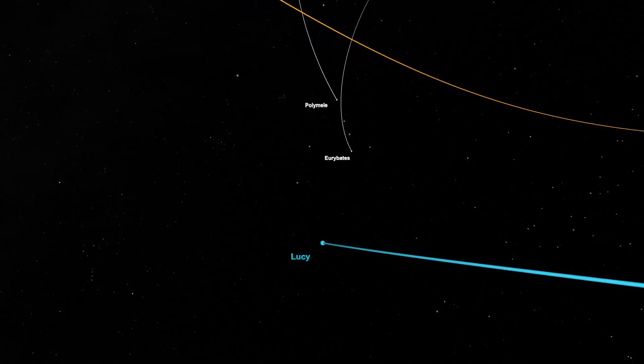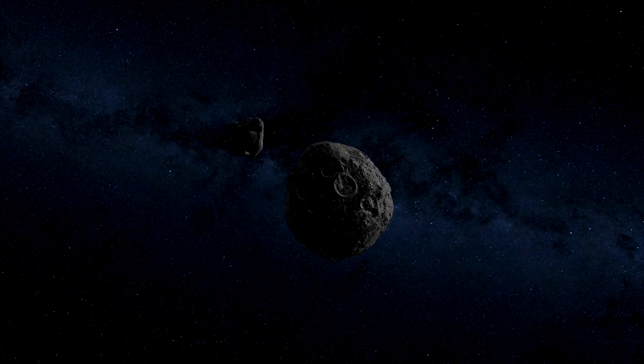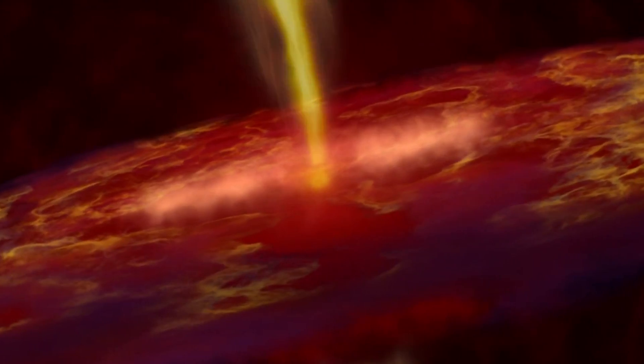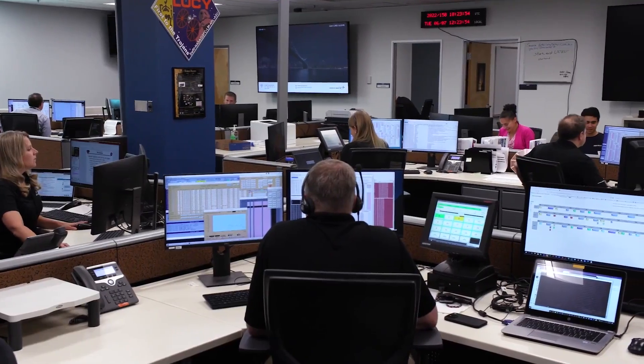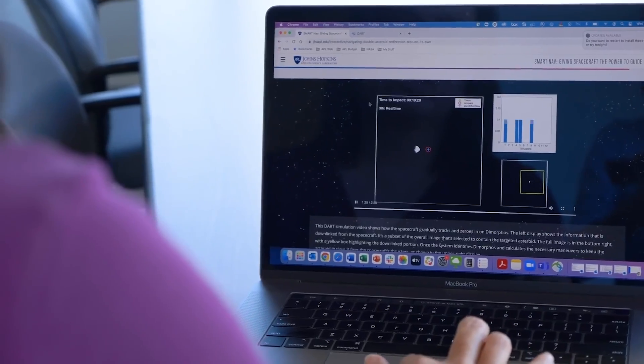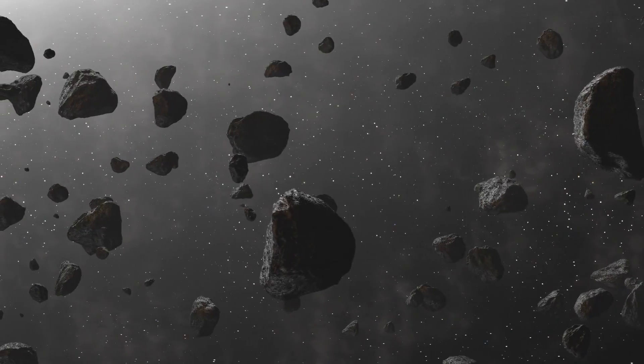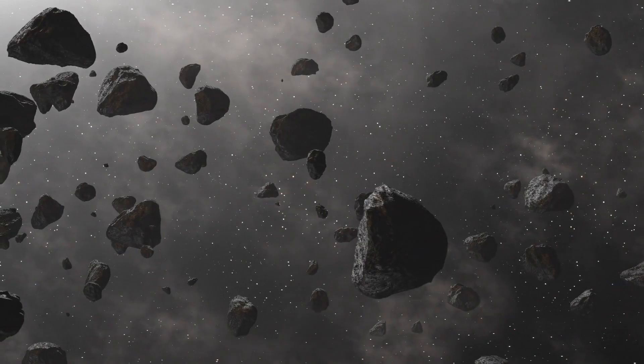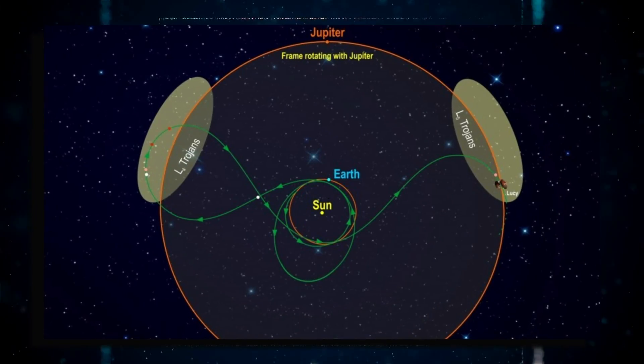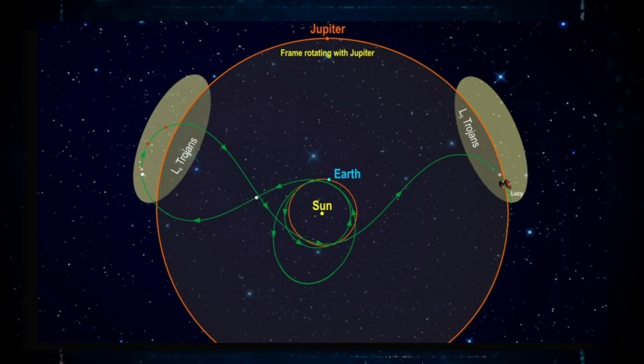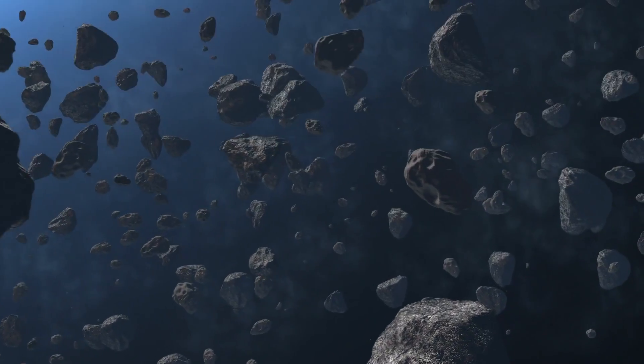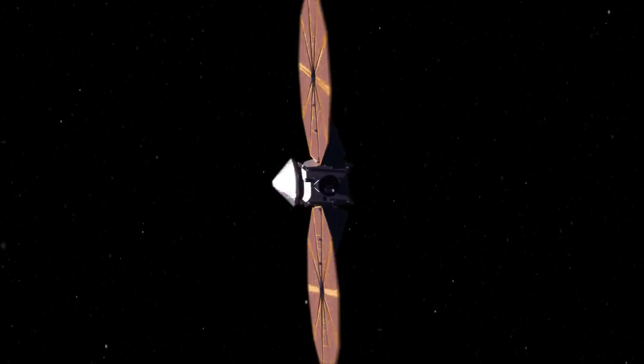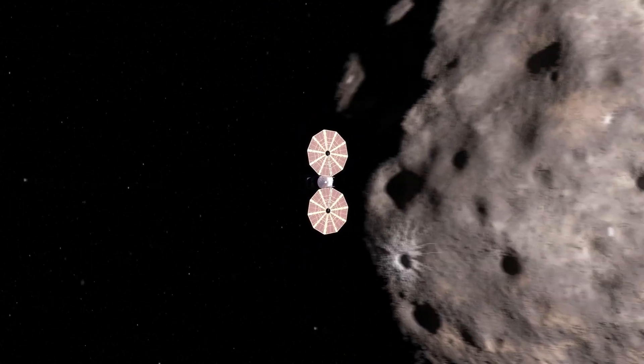In conclusion, the Lucy mission represents a significant step forward in our understanding of the early solar system and the formation of planets. With its groundbreaking mission to explore the Trojan asteroids, Lucy will bring back invaluable data that will help scientists understand the history and composition of these ancient bodies. Through its use of gravity assists and its ability to discover new objects in the asteroid belt, Lucy is a testament to the ingenuity of NASA scientists and engineers. As Lucy continues its journey through the solar system, it will undoubtedly encounter new challenges and make new discoveries, and its legacy will be felt for years to come. Now, let's hear your thoughts about NASA's Lucy mission in the comments section below.